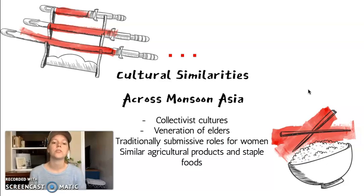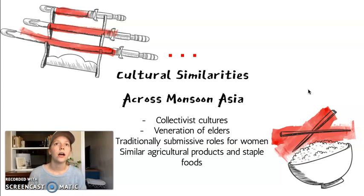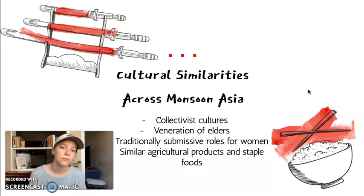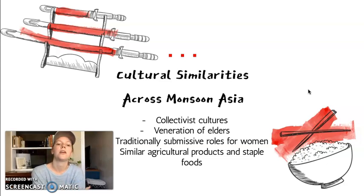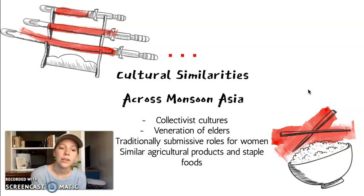Besides climate, there are cultural similarities, which some argue are caused by these climate similarities. The cultures in Monsoon Asia are usually collectivist cultures, meaning they don't emphasize individuality — they emphasize community structure. You think about what is best for your community and your people rather than just what is best for you. There's a consistent veneration of elders across these cultures, and usually a submissive role given to women, though that's fairly typical worldwide. And there are a lot of similarities in agricultural products and staple foods — rice being a major one, along with wheat and other cereals like sorghum, whereas in the West, wheat, flour, and bread are the main staples.